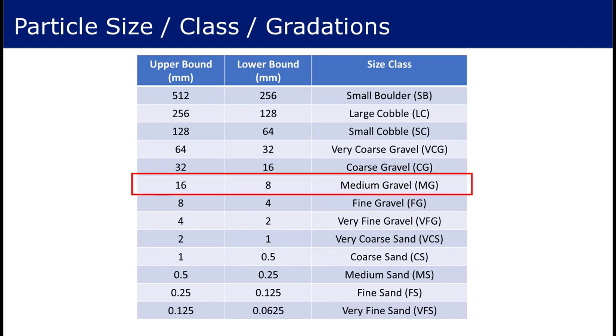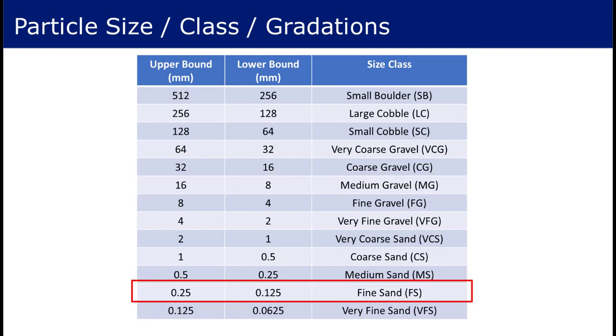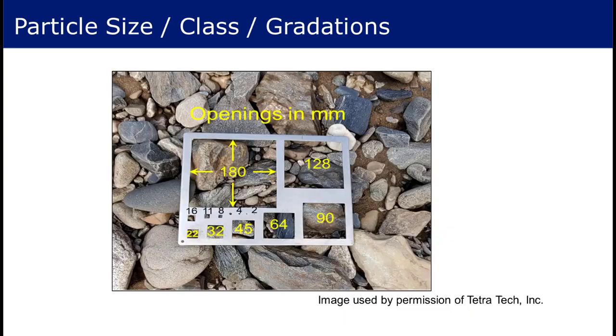So for example, medium gravel is all particles between 16 millimeters and 8 millimeters, and fine sand is all particles between 0.25 millimeters and 0.125 millimeters. The profile of all the sediment in a river channel can thus be described by taking a representative sample from the field and passing it through a series of sieves with holes corresponding to the breaks between sediment classes.